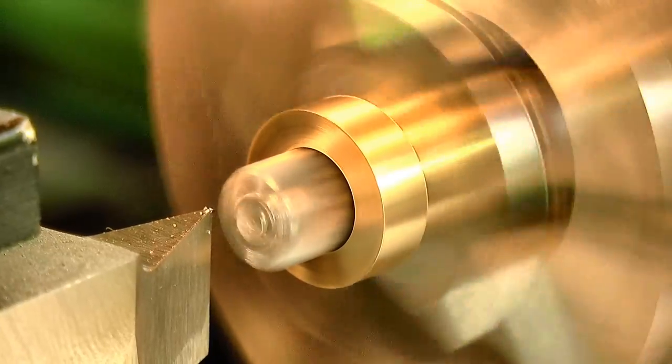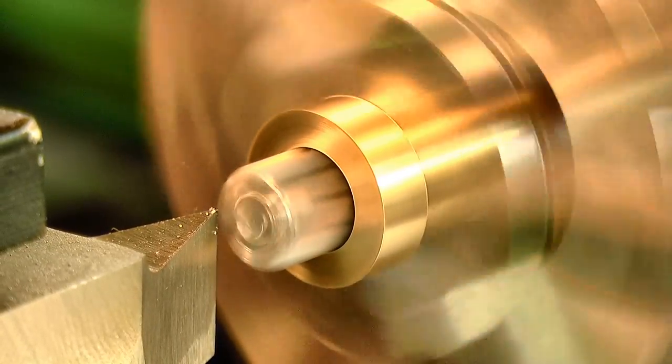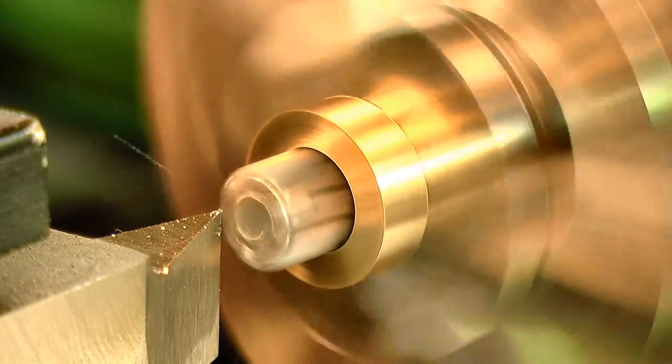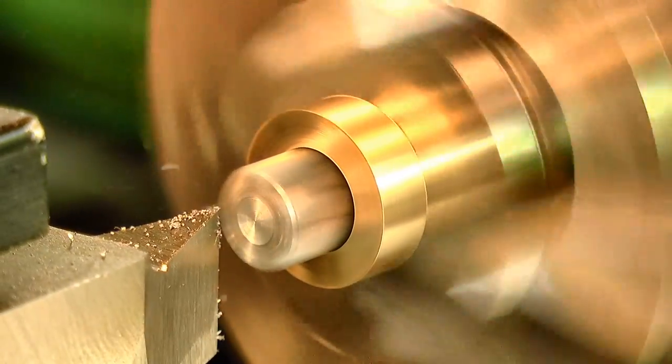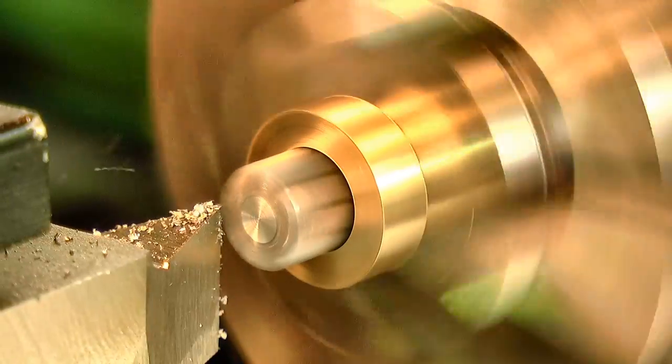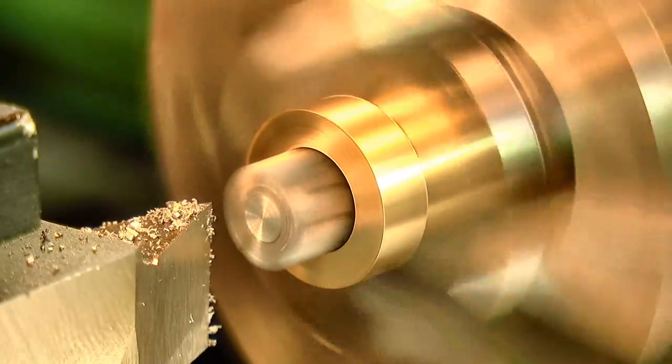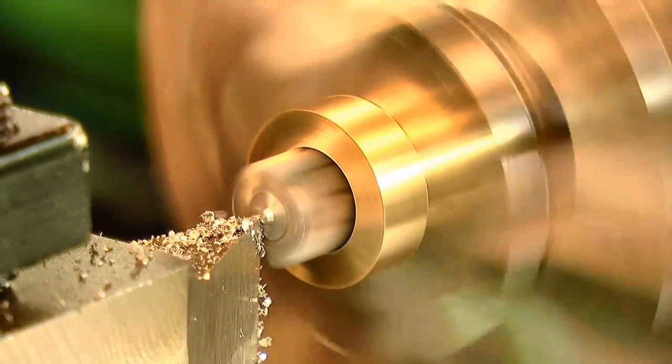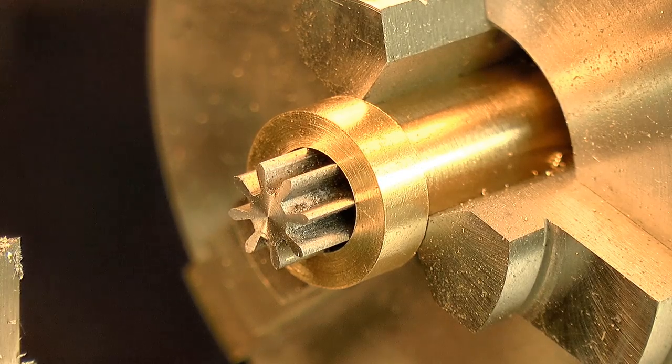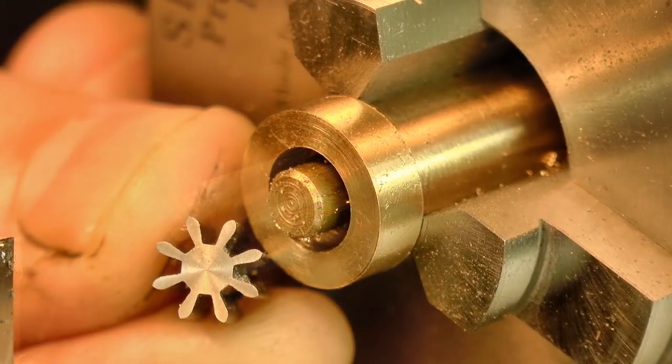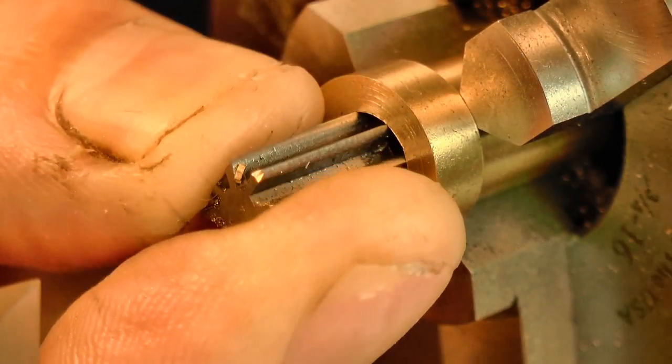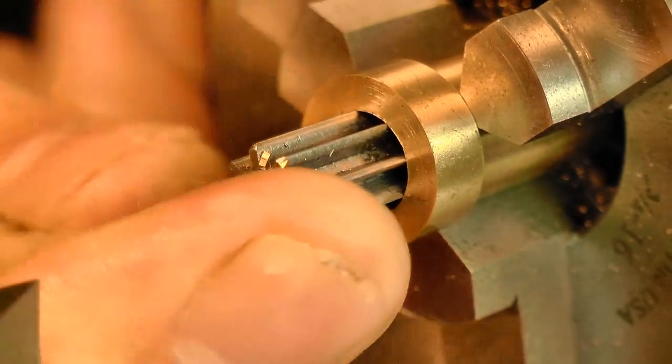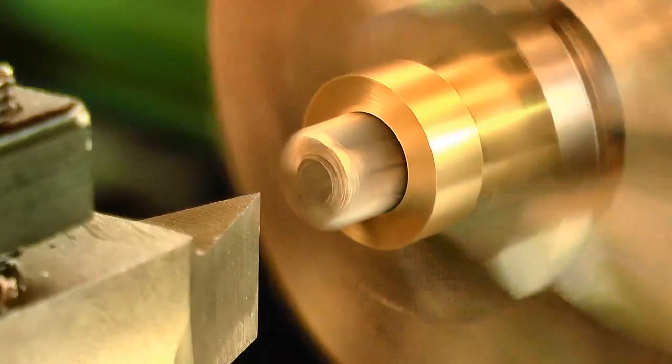The pinion can now be faced to length. This is my first chance to see whether the cutter was correctly centered. Thankfully it was, but I've had more than a few that weren't. The part is then flipped end for end, and given the same facing cut, followed by drilling and reaming.